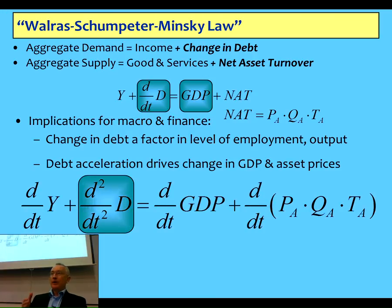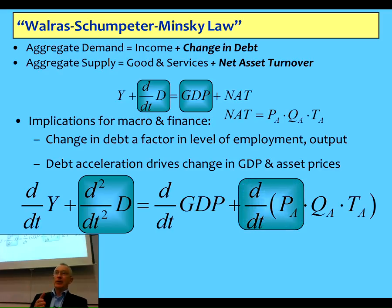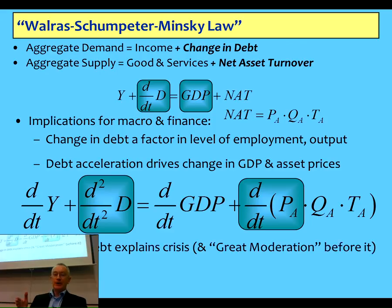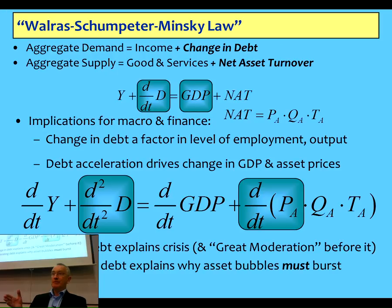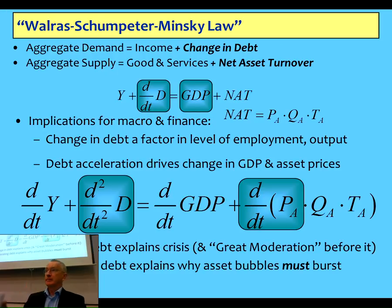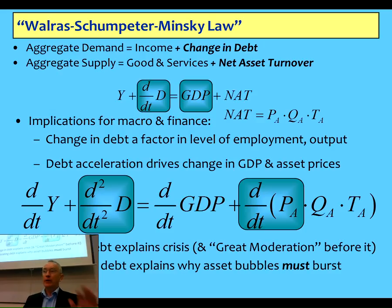When you look at the rate of change, the acceleration of debt is going to be part of the change in demand, giving a relationship between the acceleration of debt and the change in asset prices. The correlation will be between the acceleration of debt and the change in asset prices, and that's one reason why asset price bubbles have to burst — because you can't have accelerating debt forever. Something can grow forever, but nothing can accelerate forever.